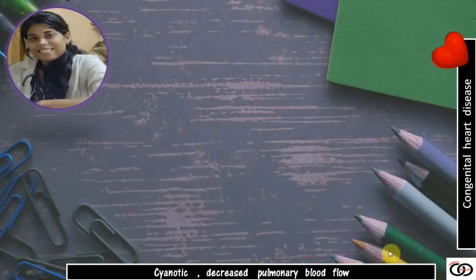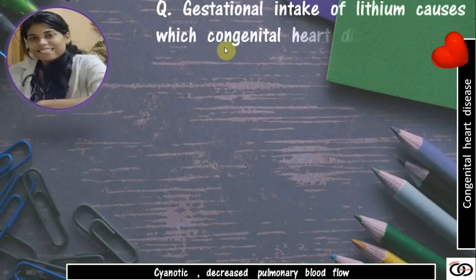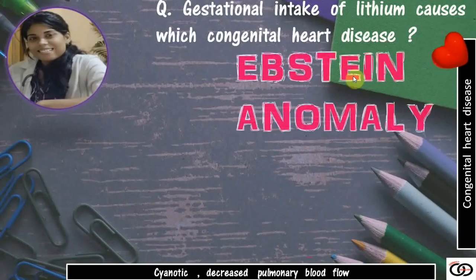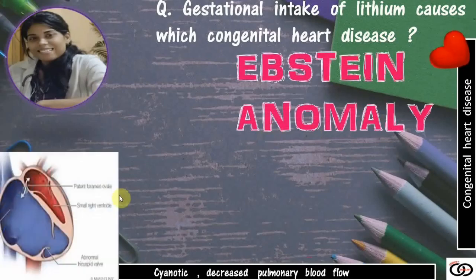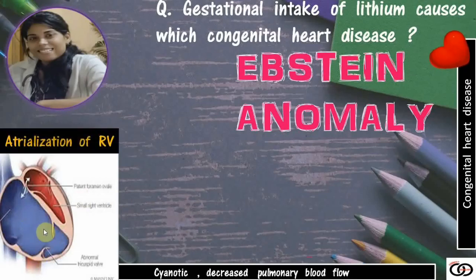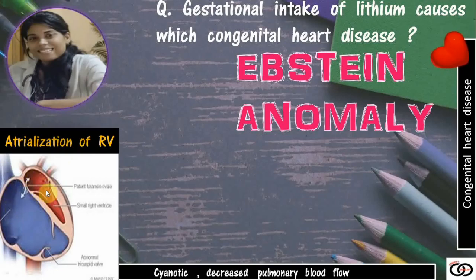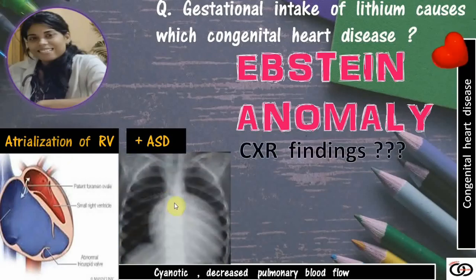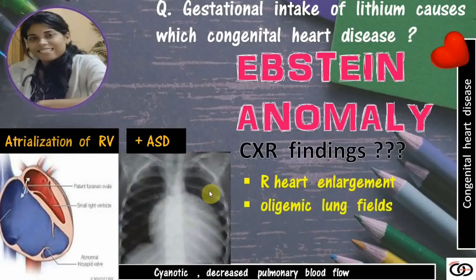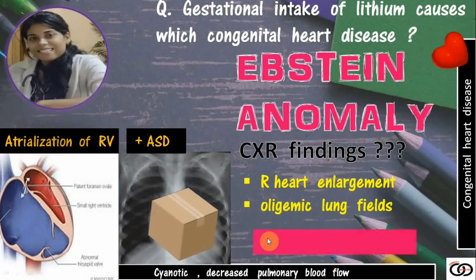Gestational intake of lithium causes Ebstein anomaly. In this condition the tricuspid valve displaces downwards, so the right atrium extends down — there is atrialization of the right ventricle. Cyanosis occurs because an ASD causes blood to go from the right atrium to the left atrium. On chest X-ray there is right heart enlargement due to an enlarged right atrium, and the lung fields are oligemic as the right ventricle receives less blood. This heart looks just like a box, so this appearance is known as the box-shaped heart.